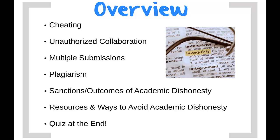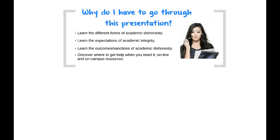For a brief overview, this presentation will cover academic integrity and the expectations set forth by UCLA. Please listen, pay attention, and take notes as there will be a quiz at the end. We will discuss the most common forms of academic dishonesty: cheating, unauthorized collaboration, multiple submissions, and plagiarism. We will also discuss the different outcomes or sanctions students can receive if found responsible for academic dishonesty, the resources available to you, and how to avoid academic dishonesty.